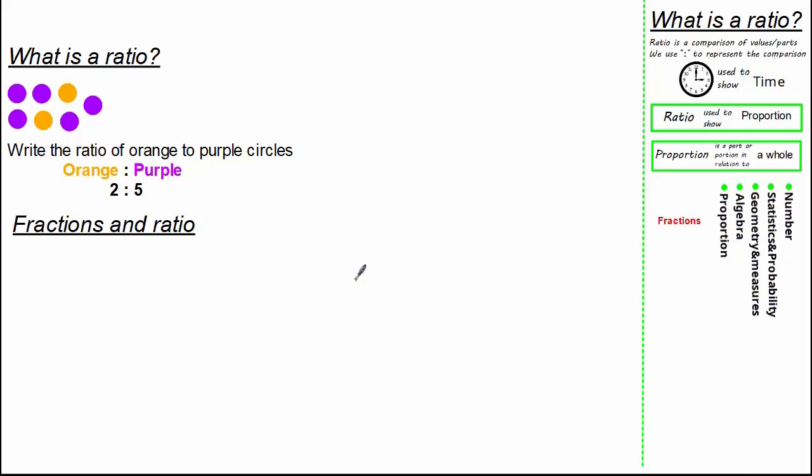So let's look at our original picture and make the connection with fractions and ratio. Now the question wants us to write the fraction of orange circles. Now we have 2 orange from a total of 7 circles, so our fraction is 2 over 7. You can see the connection between ratio and fractions, where the whole for the ratio is indicated by the sum of its parts, and the whole of the fraction is indicated by the denominator.